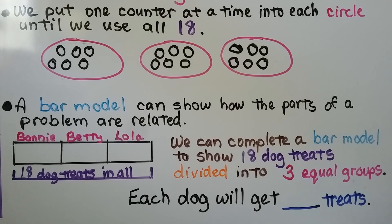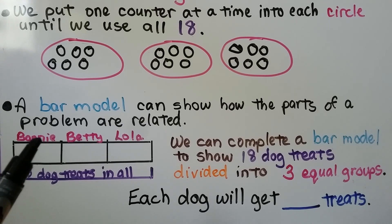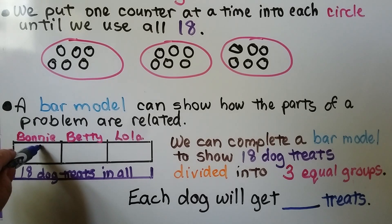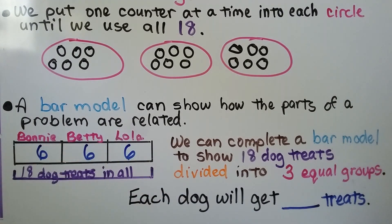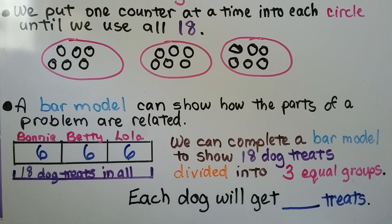A bar model can show how the parts of a problem are related. We can complete a bar model to show 18 dog treats divided into three equal groups. There are 18 dog treats in all - that's the length of the bar. My three dogs, Betty, Bonnie, and Lola, each get 6 treats. We can see that 18 dog treats divided into three equal groups equals 6. Each dog will get 6 dog treats. We divided the 18 treats into three groups of 6.